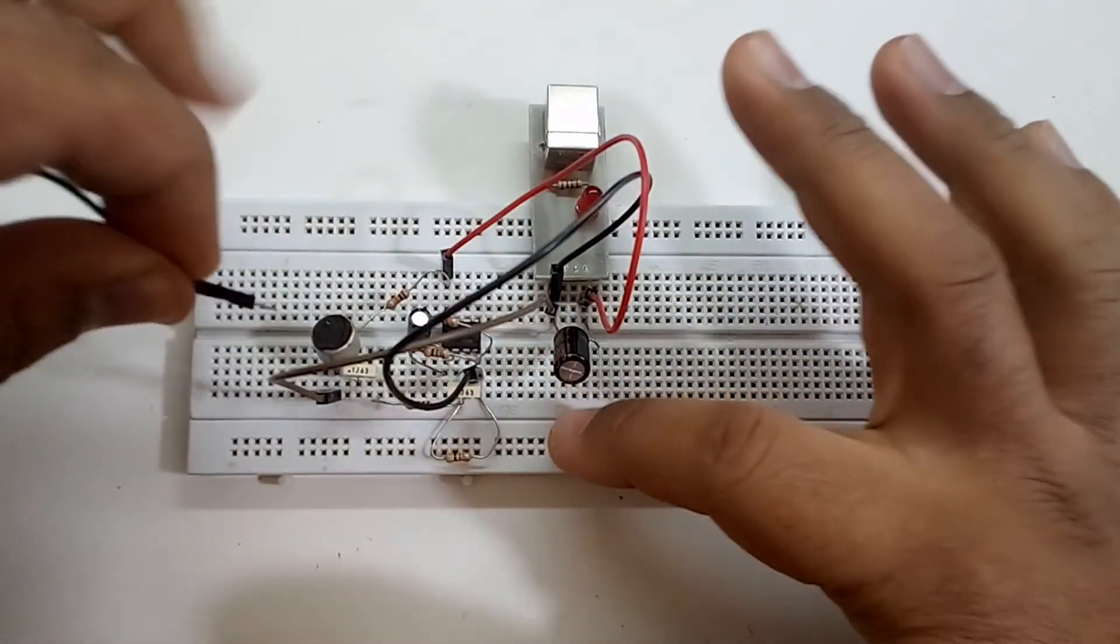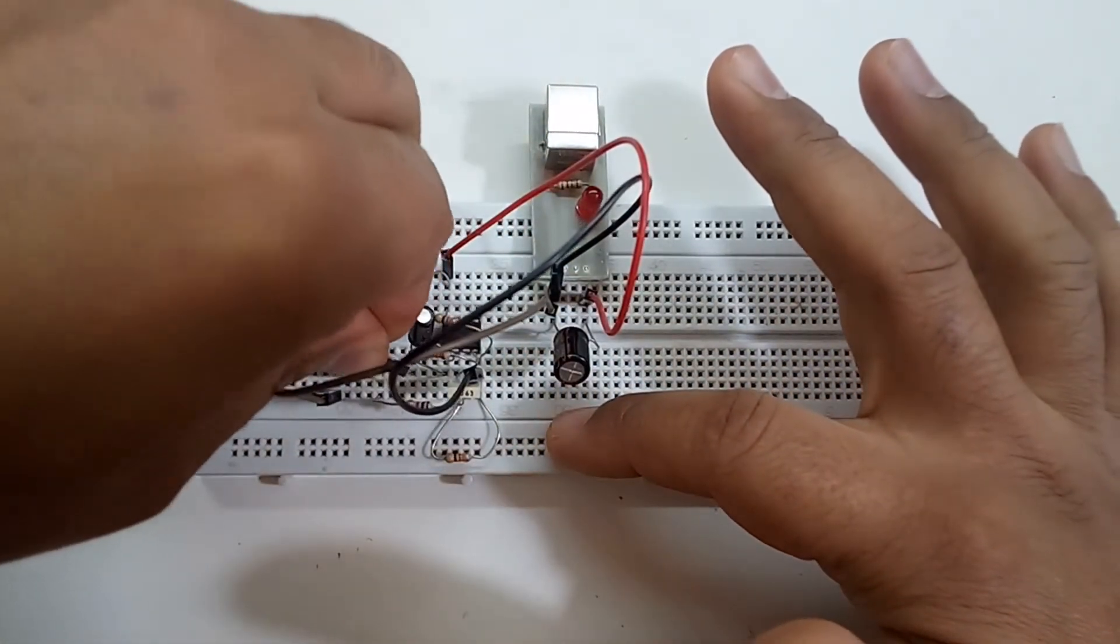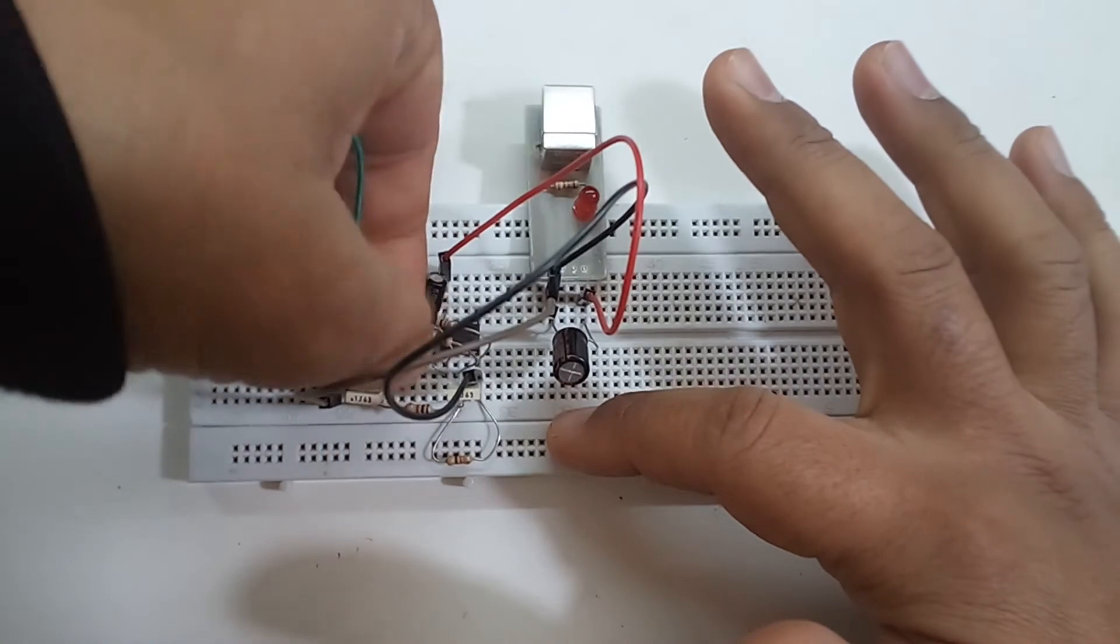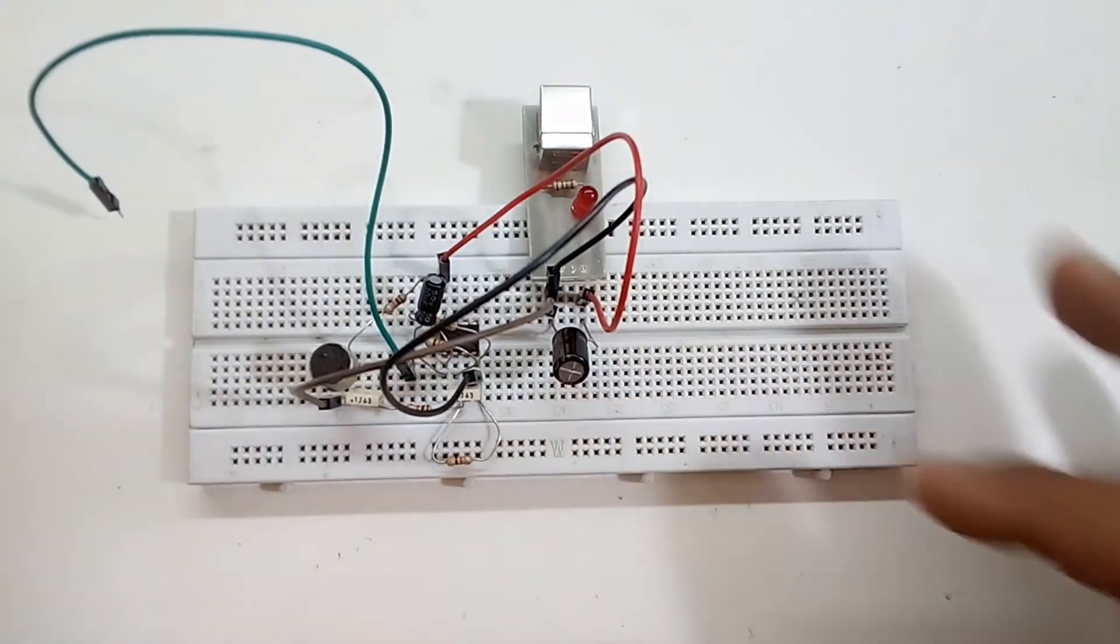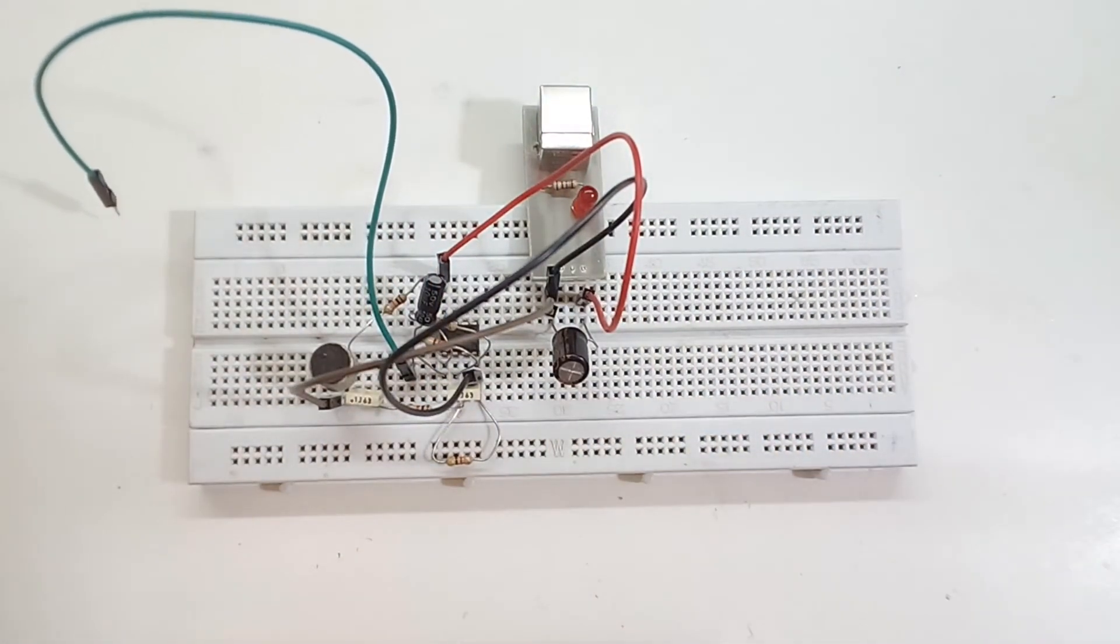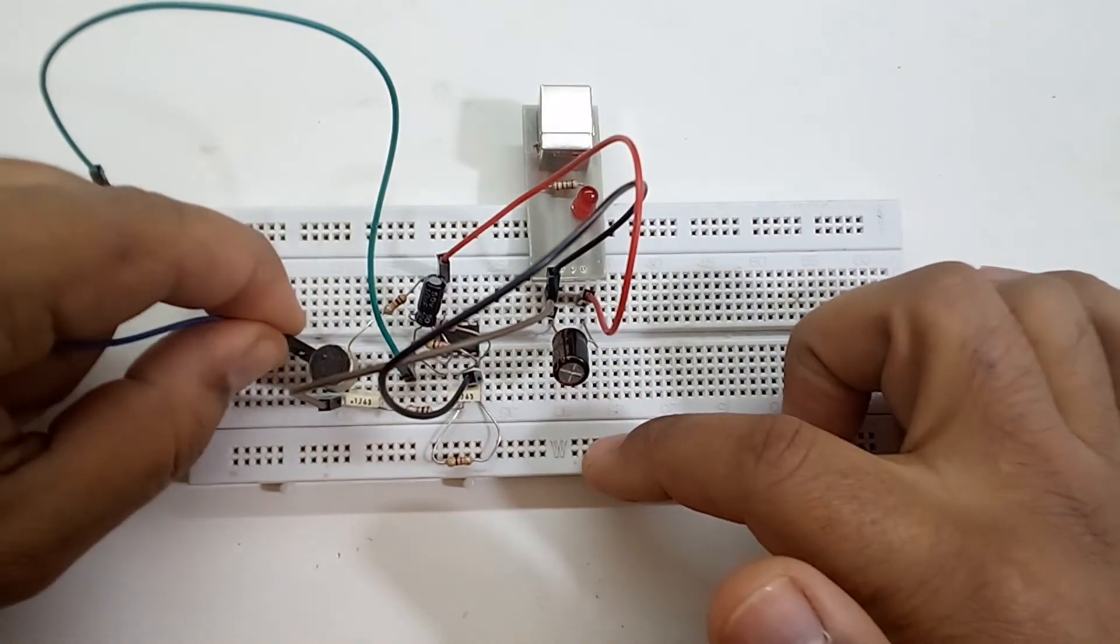We also connect another wire to the negative terminal of the 10 microfarad capacitor, and finally we connect another wire to the ground.